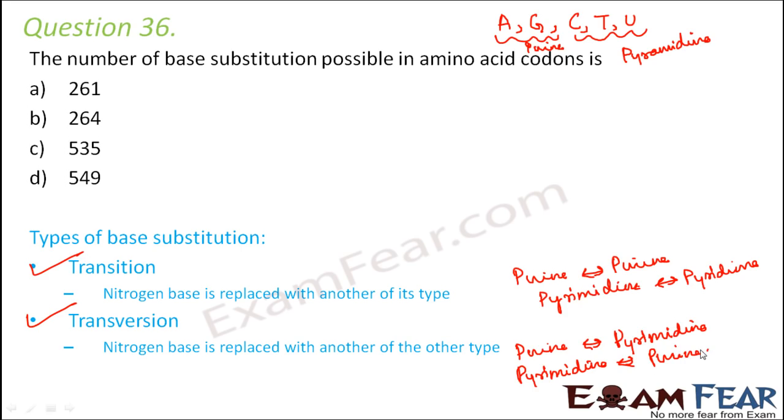Let us calculate how many total base substitutions are possible in amino acid codons. First of all, how many amino acid codons do we have? There are 61 amino acid codons because total 64 codons exist, out of which 3 are nonsense codons that do not code for amino acids.